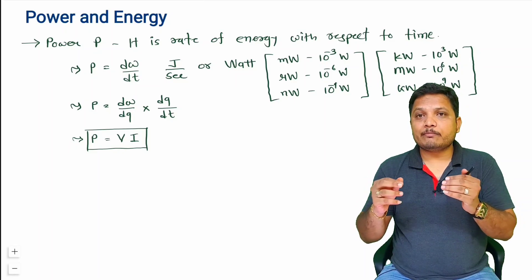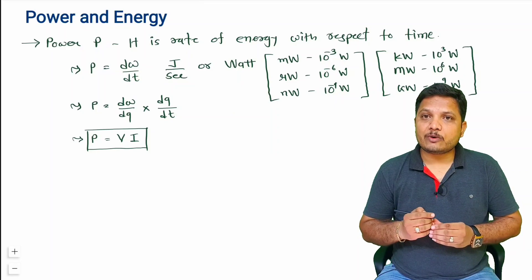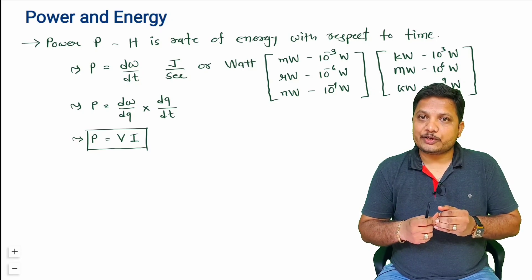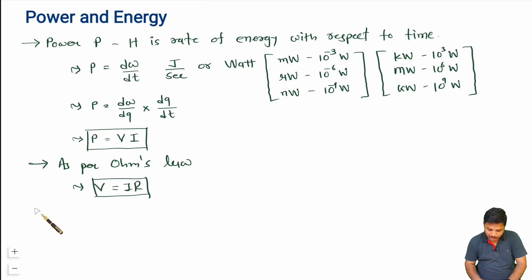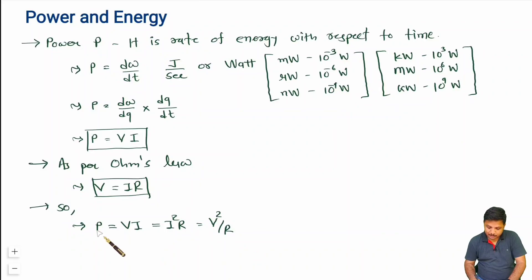Power can also be calculated using other formulas derived from Ohm's Law. Since V = IR, we can substitute into P = VI. If we substitute V = IR, we get P = I²R. If we substitute I = V/R, we get P = V²/R. So we can calculate power using VI, I²R, or V²/R.